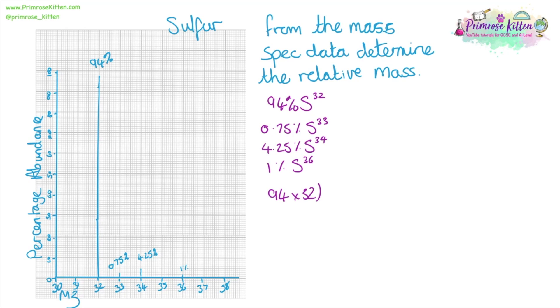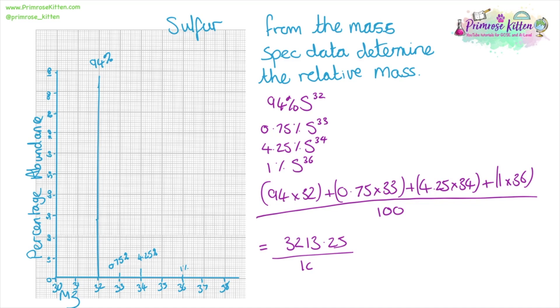These numbers can be used in exactly the same way to determine the relative mass, all of that over 100. And for these questions it is especially important to show all of your working so you can pick up all of the marks if you make a mistake when you're using your calculator or if you miss one of the isotopes out. Giving us 32.13 as the relative mass.